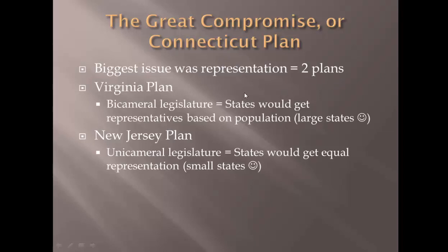There were two plans put forth. Virginia wanted a plan based on population, calling for a bicameral legislature — a Congress with two houses. States would get representatives based on their population, so large states would have more power. Large states were happy. But New Jersey said, as a small state, if large states get all the representatives, they'll always have more votes and small states will never be heard. New Jersey wanted a unicameral legislature with equal representation — no matter how big or small, every state gets the same number of representatives.